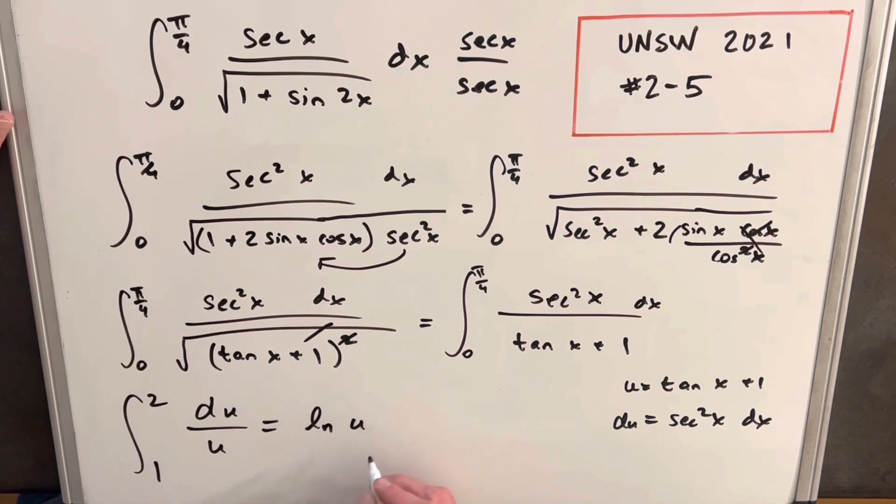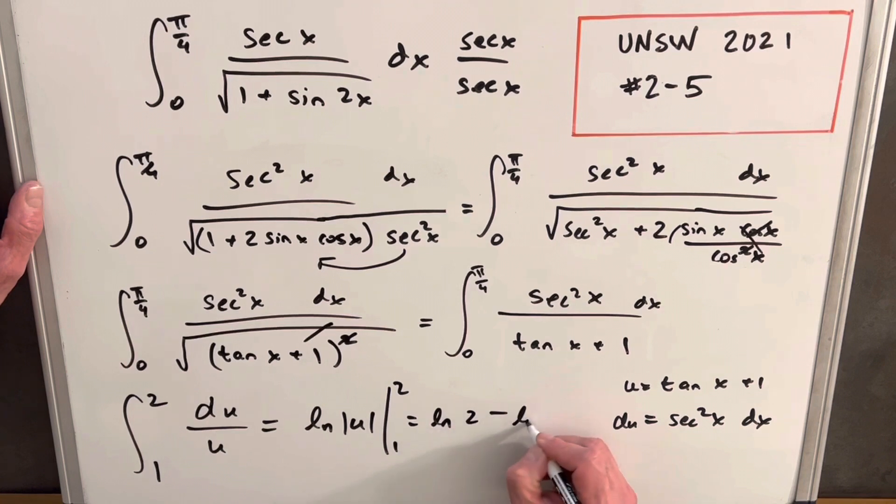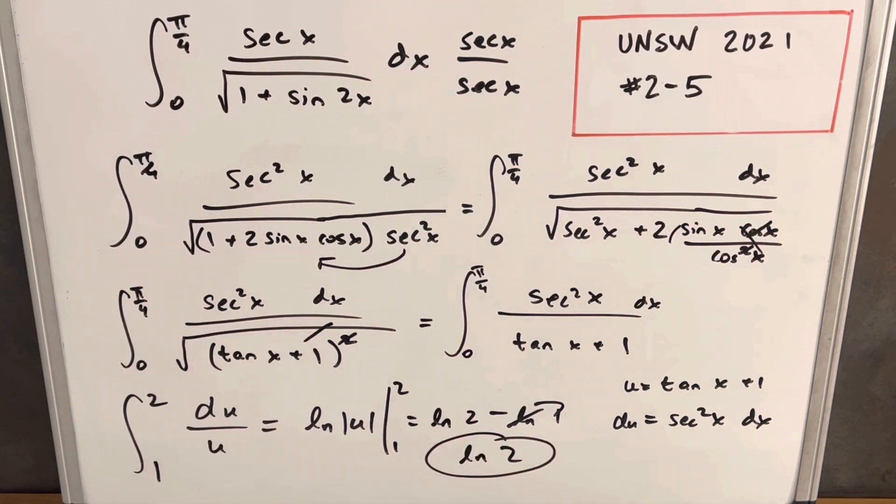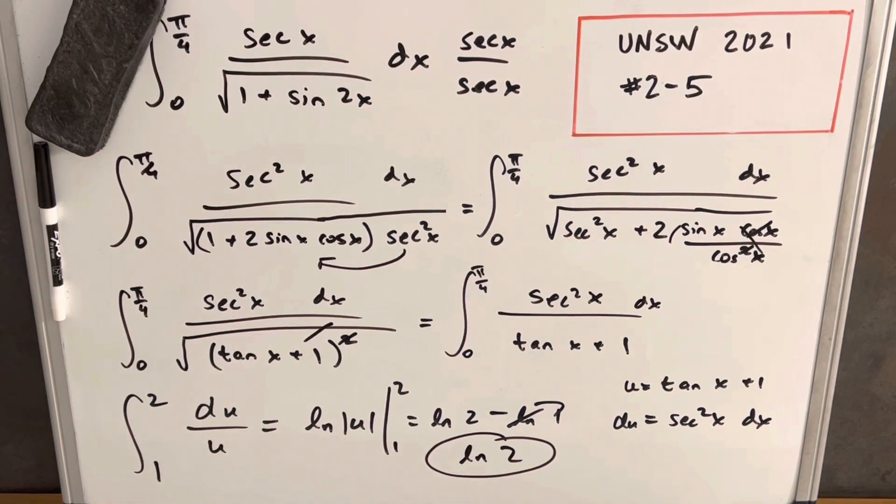Like I said earlier, we're going to have du in the numerator over u. This is just going to be natural log of u. We'll evaluate this from one to two. So we're going to have natural log of two minus natural log of one. This is just zero. And we're left with the solution of just natural log of two. That's it. UNSW 2021 problem two dash five. Thank you again for watching. Please like and subscribe. Have a great day.